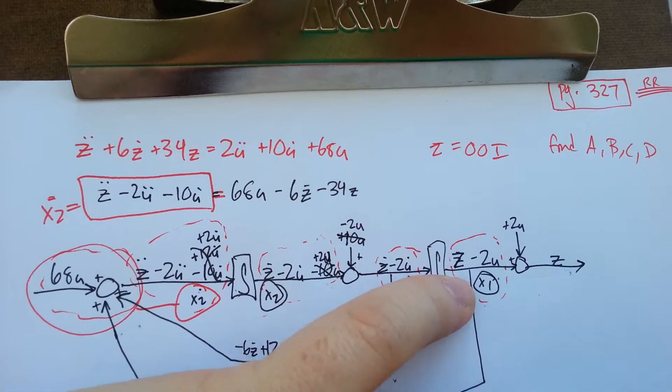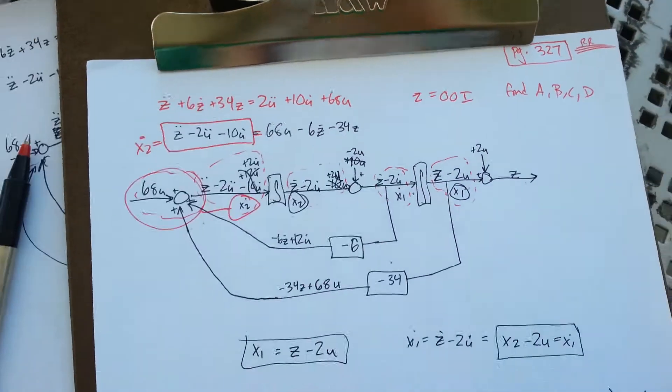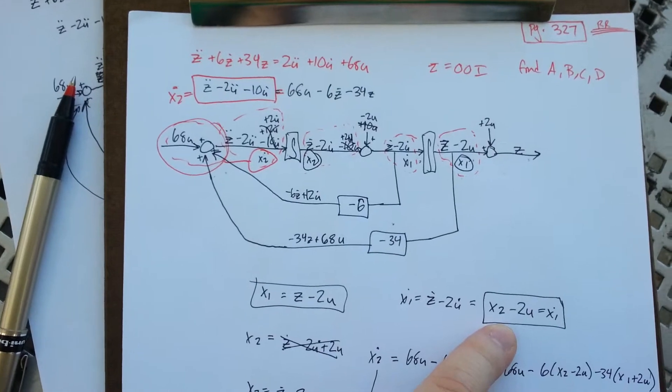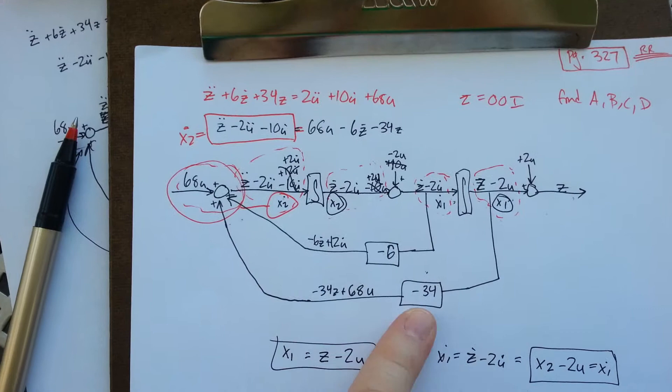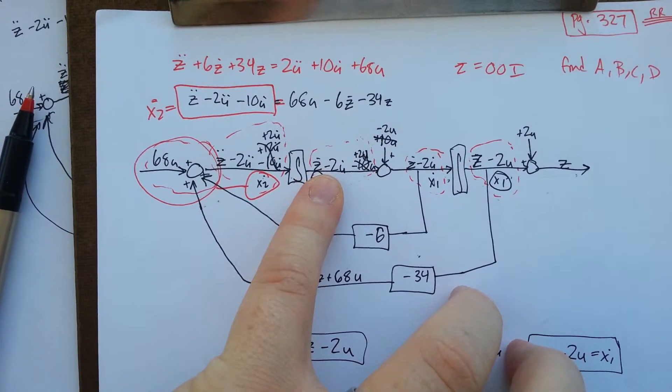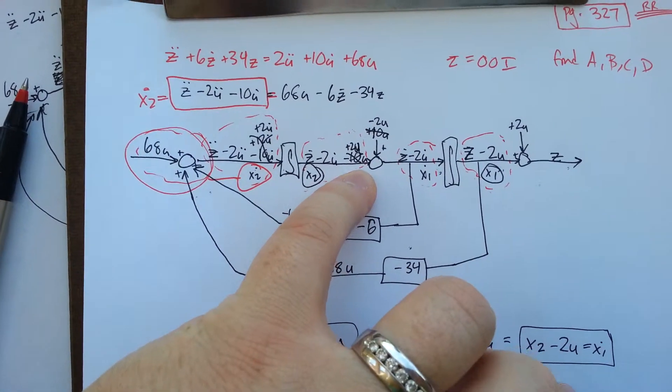We can easily identify that x1 is z minus 2u, which we can see here. But your x1 dot is z dot minus 2u dot and your x2 is z dot minus 2u plus 2u.